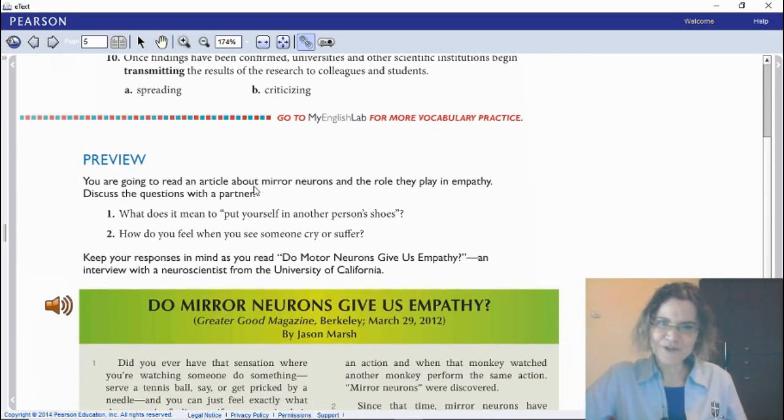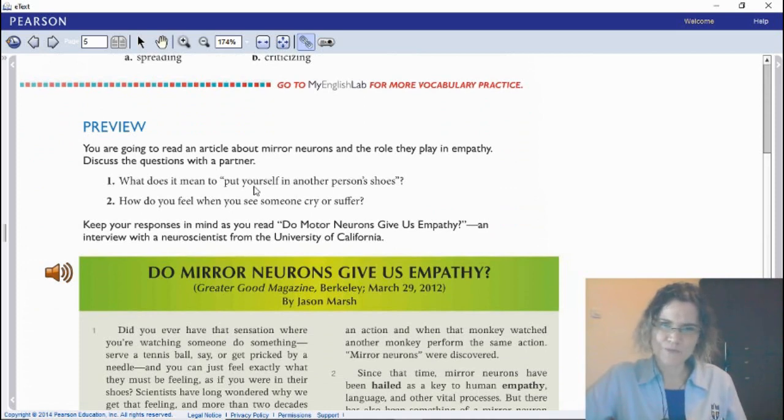You're going to read an article about mirror neurons and the role they play in empathy. So it is an article stated here. But funny, there are people giving their opinions. So what does it mean to put yourself in another person's shoes? And how do you feel when you see someone cry or suffer? Maybe it is good for you to write a very short answer to these two questions as a preview to understand what we are aiming for. Go ahead.